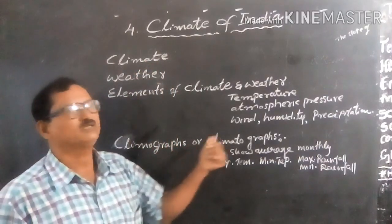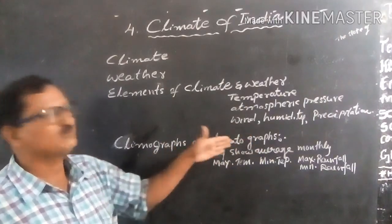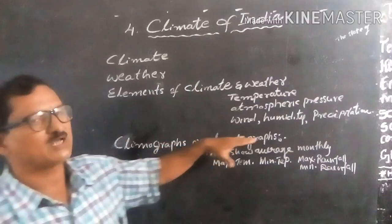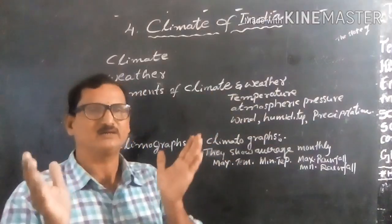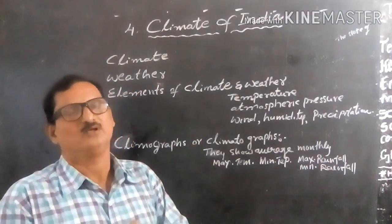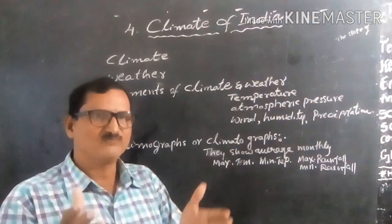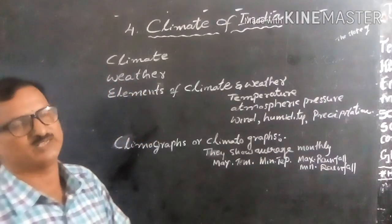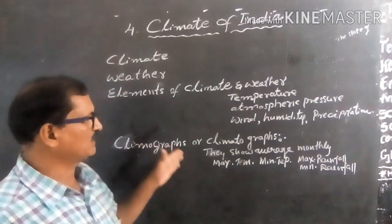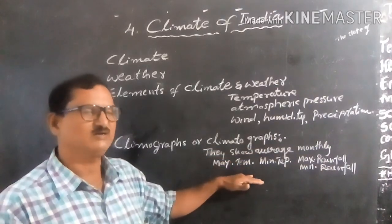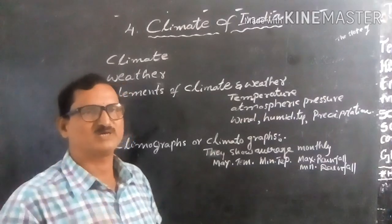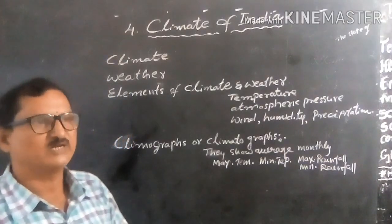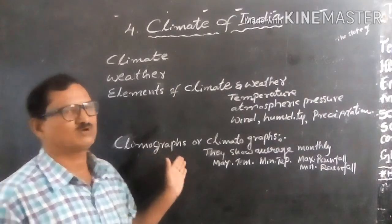Then, climatographs or climatographs — both words are the same and common. Climatographs show the average monthly maximum or minimum temperature for a given place, and the maximum or minimum rainfall for a given place. They help to record and compare area to area or place to place, and are useful for measuring maximum or minimum temperature and rainfall recorded for a particular period.